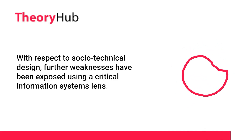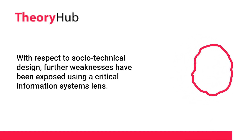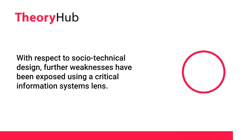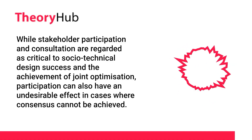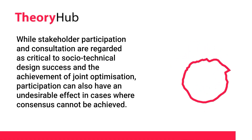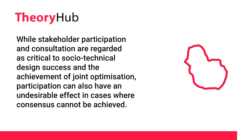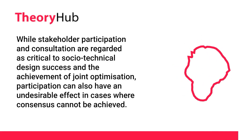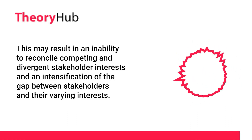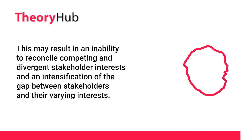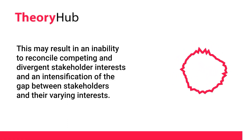With respect to socio-technical design, further weaknesses have been exposed using a critical information systems lens. While stakeholder participation and consultation are regarded as critical to socio-technical design success and the achievement of joint optimization, participation can also have an undesirable effect in cases where consensus cannot be achieved. This may result in an inability to reconcile competing and divergent stakeholder interests and an intensification of the gap between stakeholders and their varying interests.